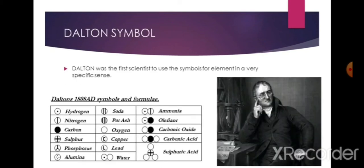Dalton was the first scientist to use symbols for elements in a very specific sense. When he used a symbol for an element, he also meant a definite quantity of that element — that is, one atom of that element. Berzelius suggested that the symbols of elements may be made from one or two letters of the names of the element. Symbols for some elements as proposed by Dalton are given in the picture.